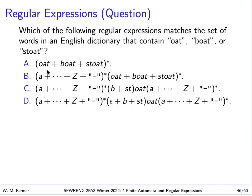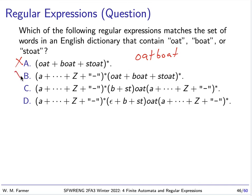We have four regular expressions. The first says these are all regular expressions built from 'oat', 'boat', and 'stoat' — for example, 'oat boat boat'. This is clearly wrong; we want all strings that contain these substrings, not just strings built from them. The second option says it's all possible strings followed by a string built from 'oat', 'boat', and 'stoat', so this is wrong too.